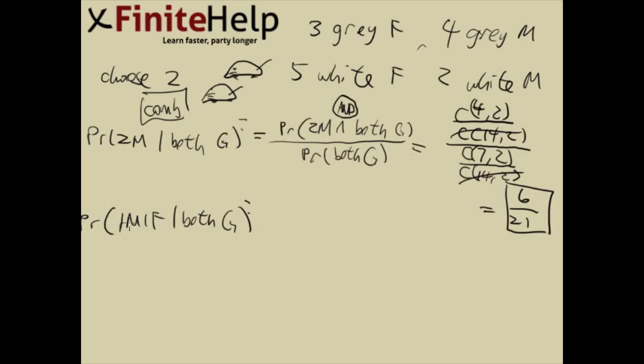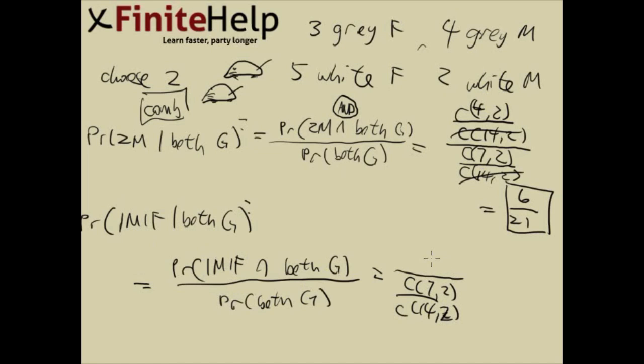What's the probability of one male and female, given that they're both gray? Conditional probability, just do this without thinking about anything. Here at the bottom, of course, it's going to be the same. Both gray. So seven, two. Over fourteen, choose two. In the top, it's really the same logic here. We need one male, one female, and both gray. Well, this is actually a little bit more complicated.